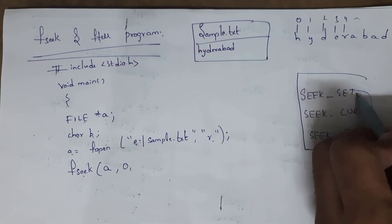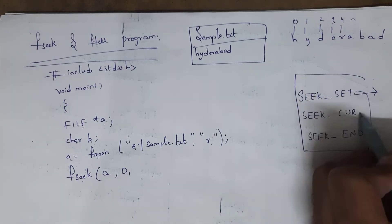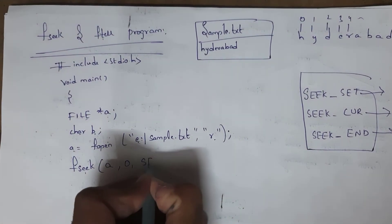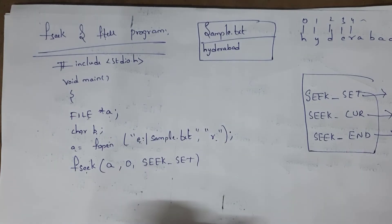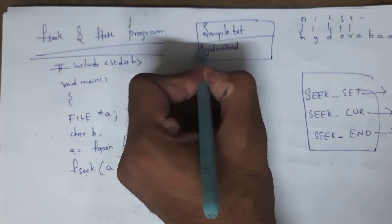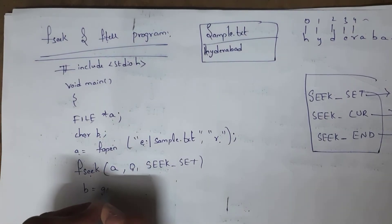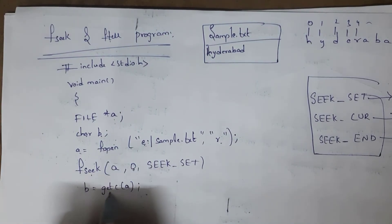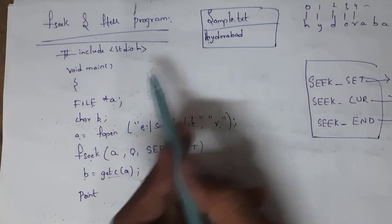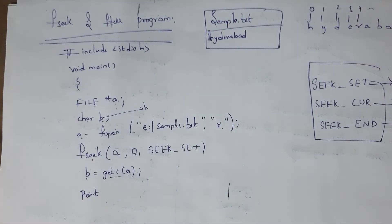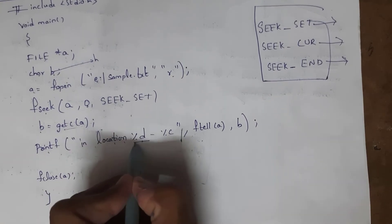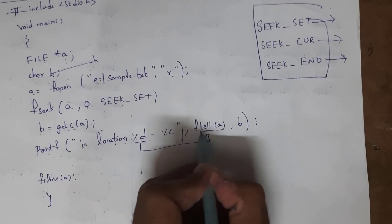The third parameter of fseek is a seek constant. There are three constants: SEEK_SET to place cursor from the starting position, SEEK_CUR for the current position, and SEEK_END for the end position. I written SEEK_SET in capital letters. When I write fseek(a, 0, SEEK_SET), the cursor is placed at the first position. Then b = getc(a) places the first character 'H' into variable B.